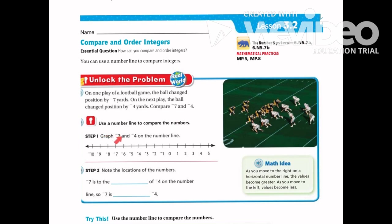Let's graph negative 7 and negative 4 on the number line. Here's negative 7 and there's negative 4. Note the locations of the numbers. Negative 7 is to the left of negative 4 on the number line, so negative 7 is less than negative 4.